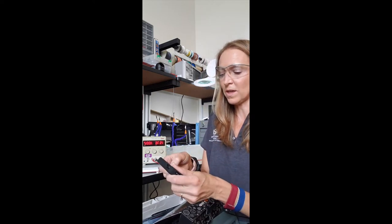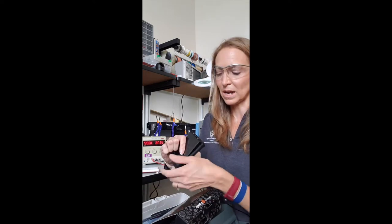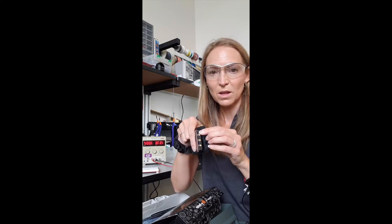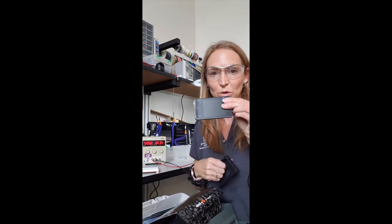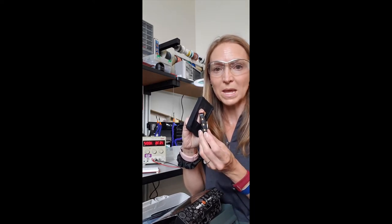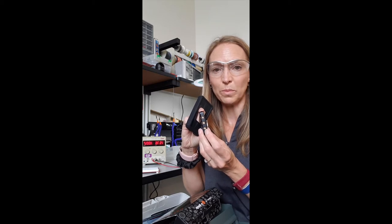So on this, mine has a little protective case. Yours will just have the actual scope itself because they didn't have enough cases available. You have two channels as input, channel A, channel B, and then one output that can generate output signals, sine waves, square waves, etc. So make sure you keep your inputs and outputs straight.